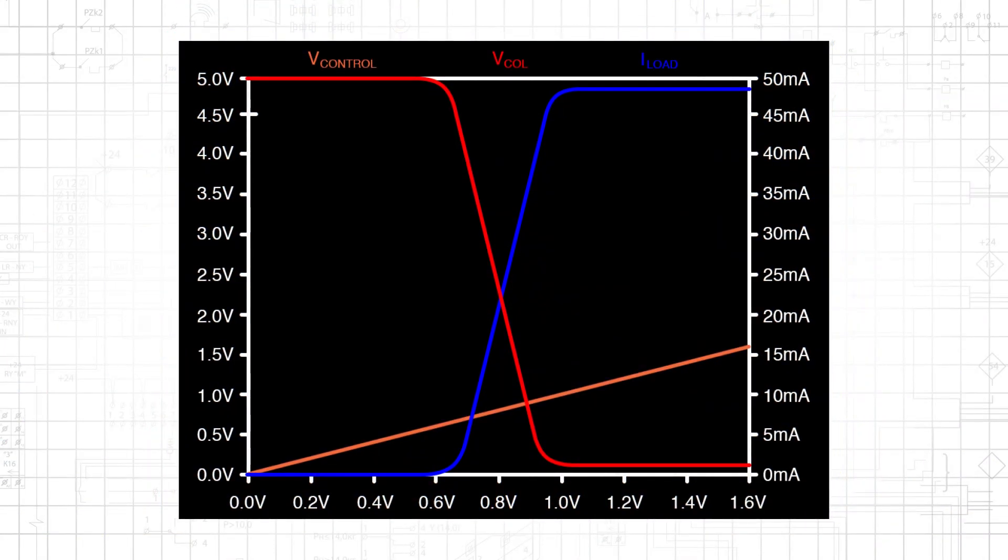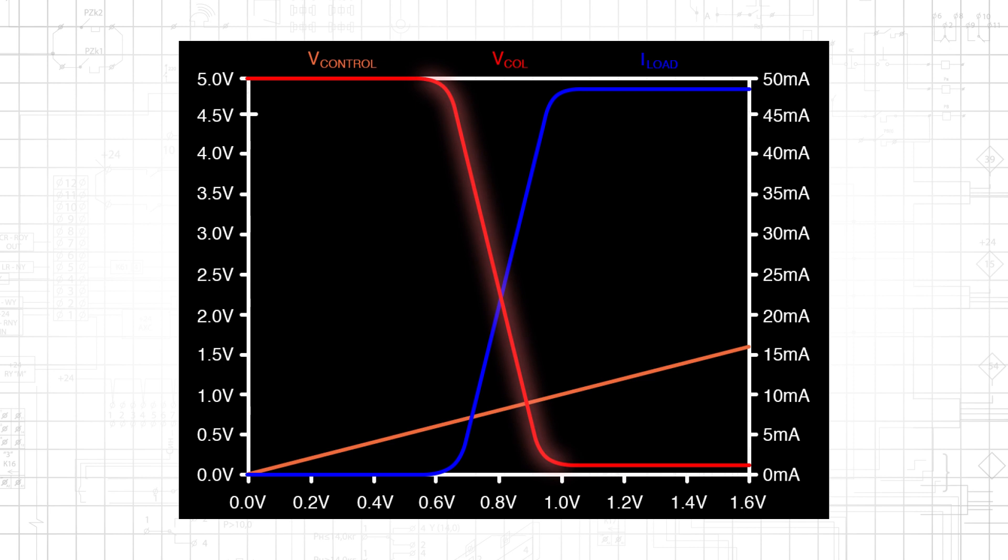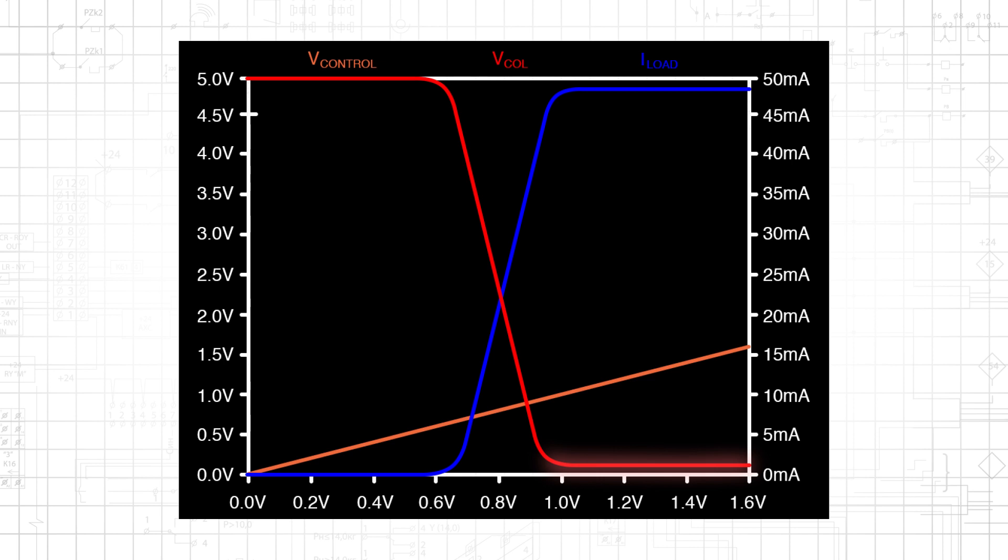This plot was used in a previous tutorial, except the labels have been changed to help us understand why saturation mode provides maximum current to a switched load. The collector voltage, VCOL, decreases during forward-active operation, and levels off when the transistor enters saturation. We approximate the saturation mode collector voltage as a constant VCE sat equals 0.2 volts, and we think of VCE sat as the lowest collector voltage that is possible during normal operation.